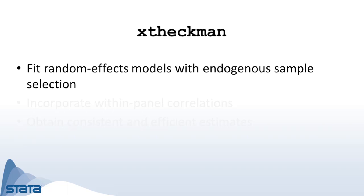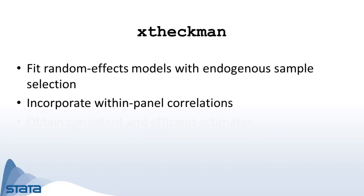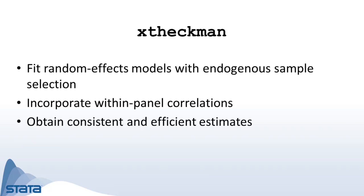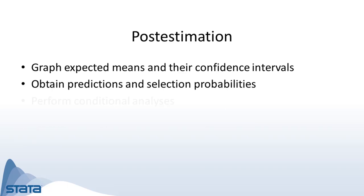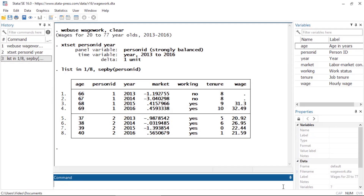Instead of Stata 16, you can use XT Heckman to fit random effects models with endogenous sample selection. This command incorporates within-panel correlations so that you can obtain both consistent and efficient estimates. After fitting a model with XT Heckman, you can graph expected means and their confidence intervals, obtain predictions and selection probabilities, perform conditional analyses, and much more.